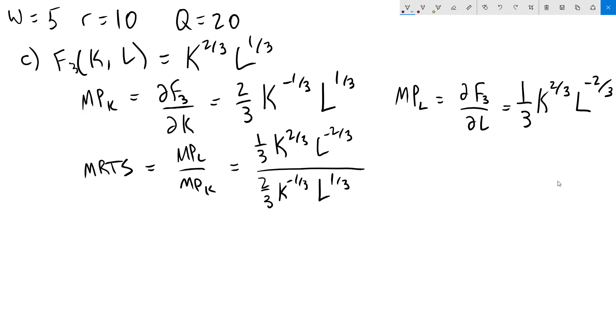We can simplify this down a bit. The 1 thirds cancel. Our k to the negative 1 third is going to come up to the top of the fraction. And our L to the negative 2 thirds is going to go down to the bottom of the fraction. We are left with k to the 2 thirds times the k to the 1 third on top. That's just k. On the bottom, we still have that 2 there. Don't forget that. And then we have L to the 1 third times L to the 2 thirds, which is going to be just L.